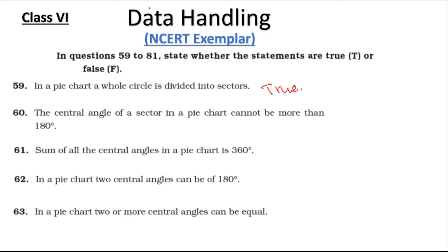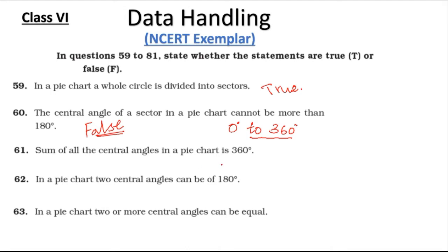Question 60: The central angle of a sector in a pie chart cannot be more than 180 degrees — this is false, because the angle can be any angle less than 360 degrees. It can range from 0 degrees to 360 degrees; it cannot exceed 360 degrees. Question 61: The sum of all central angles in a pie chart is 360 degrees — this statement is true.